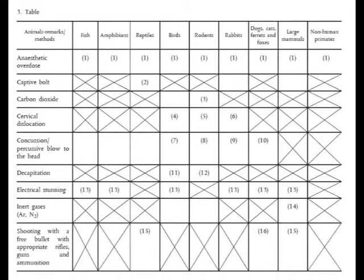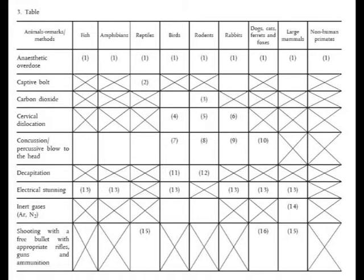Here is Table 3. Anaesthetic overdose can be used on fish, amphibians, reptiles, birds, rodents, rabbits, dogs, cats, ferrets and foxes, large mammals and non-human primates. Captive bolt can be used on reptiles, rabbits and large mammals but not the others. Carbon dioxide poisoning can be used on birds and rodents. Cervical dislocation — no for fish, amphibians and reptiles, but yes for birds, rodents and rabbits. Concussion or percussive blow to the head can be used on almost everyone except large mammals and non-human primates. Then there's decapitation, electrical stunning, inert gases, and shooting with a free bullet with appropriate rifles.